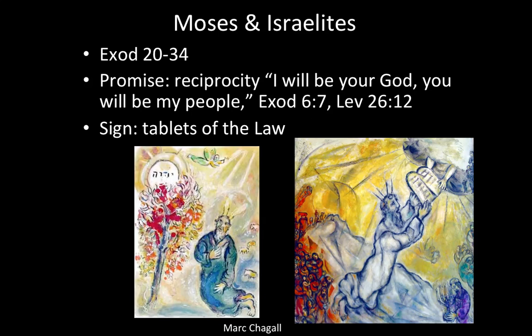We have the covenant with Moses and the Israelites, outlined in chapters 20 through 34 in the book of Exodus. The images here are from the French painter Marc Chagall, more of a contemporary Jewish artist. The left one is Moses at the burning bush, where Yahweh God is revealing himself to him — you can see that revelation happening in the upper left corner with the Hebrew letters for the word Yahweh, for Lord. And on the right, Moses receiving the Ten Commandments from God through the cloud, which represents the glory of God and the active presence of God.